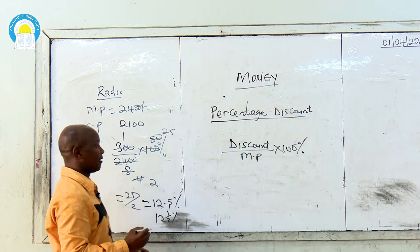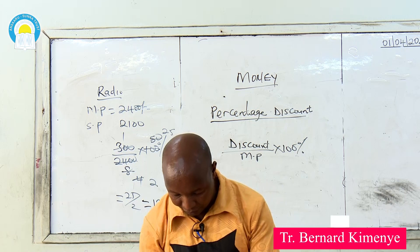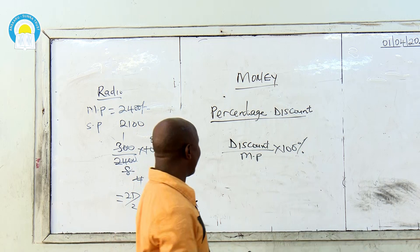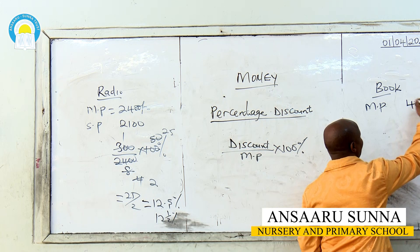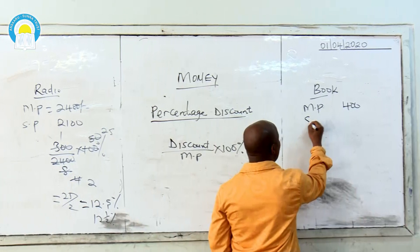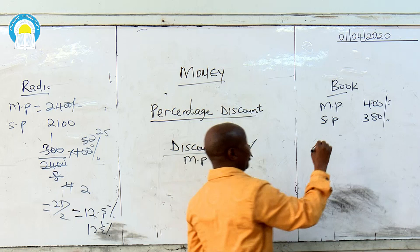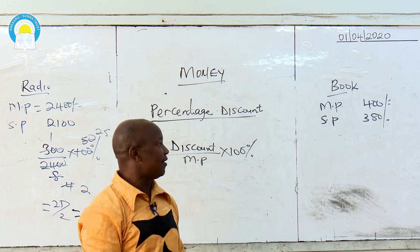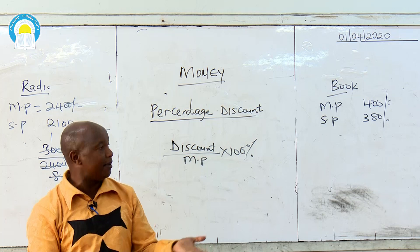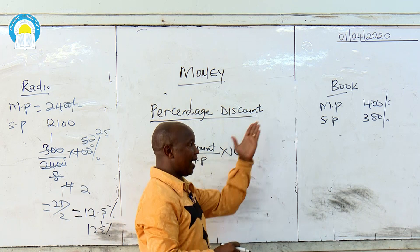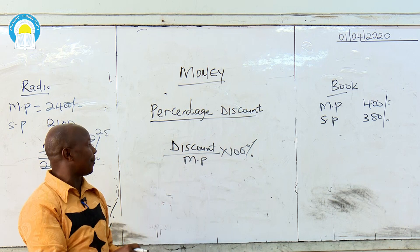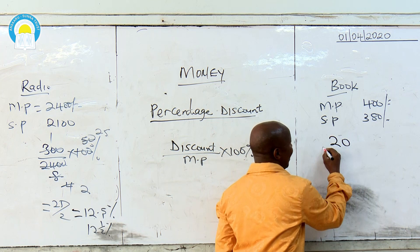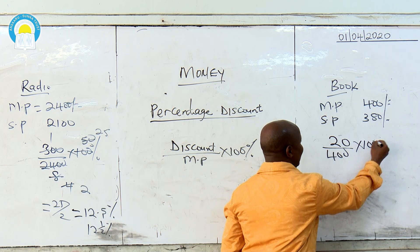Another example to get percentage discount. The market price of a book is 400 shillings. The selling price of the book is 380 shillings. So how much was the discount? The market price subtract the selling price: 400 take away 380 gives 20 shillings discount. To get the percentage discount, you say the discount itself divided by the market price, then multiply by 100%. We have 20 divided by 400, then multiply by 100%.